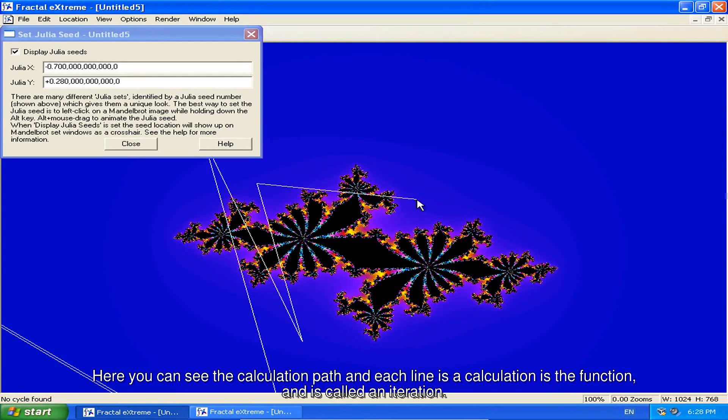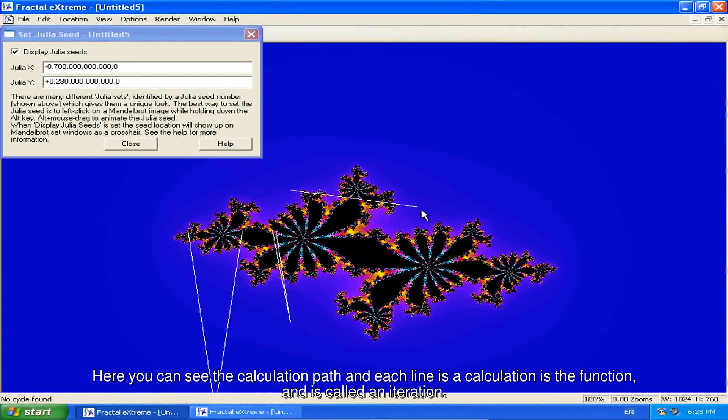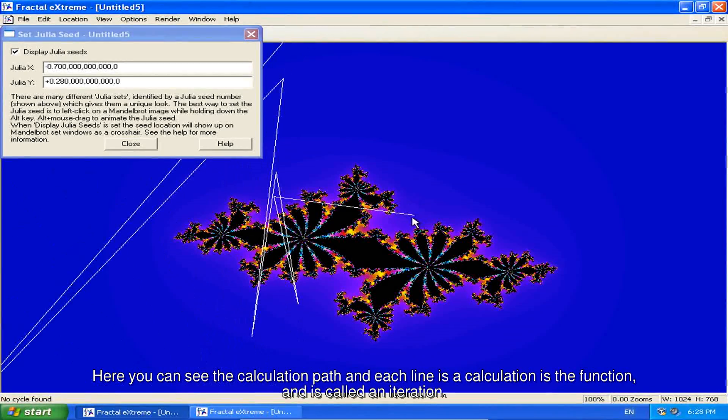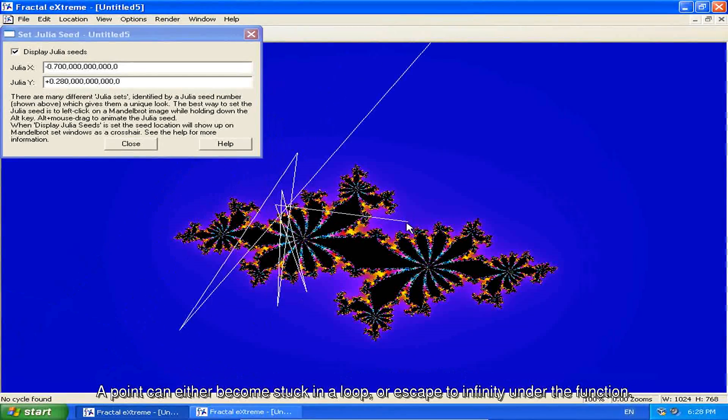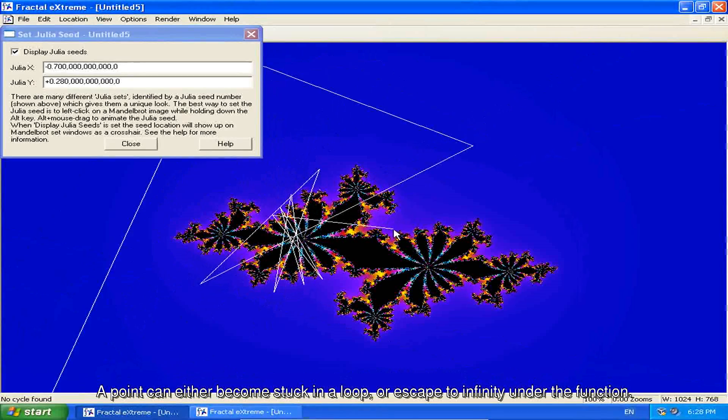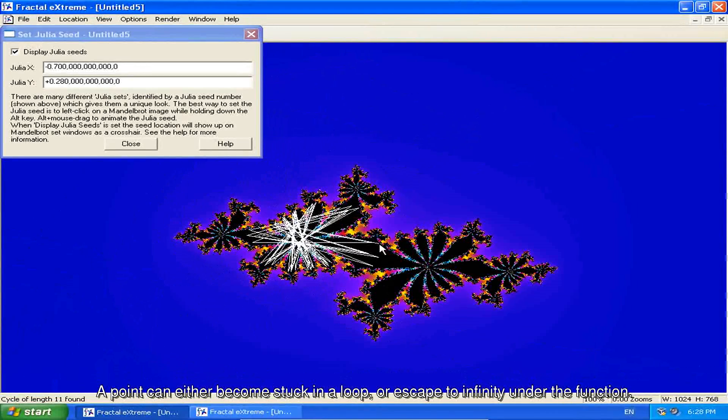Here you can see the calculation path. Each line is a calculation of the function and is called an iteration. A point can either become stuck in a loop or escape to infinity under the function.